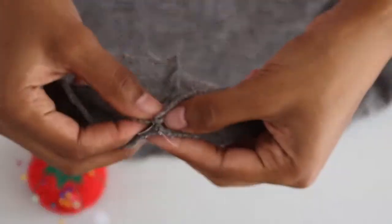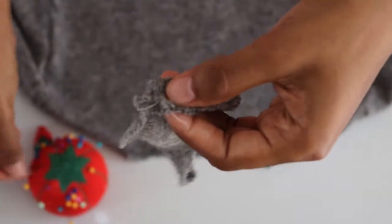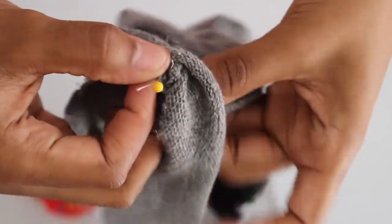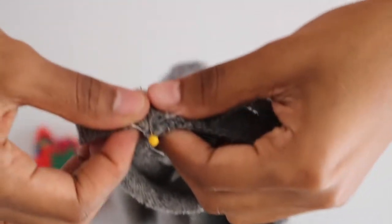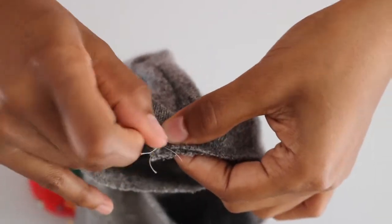So I went ahead and took that band in half and folded it on the seam. Then pinned that seam down. Then I lined the seam of the band on top of the seam of the shoulder.